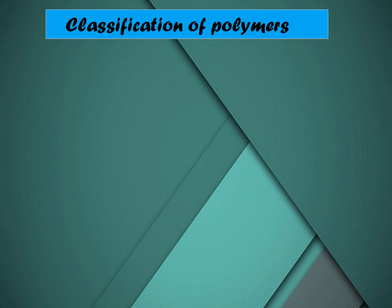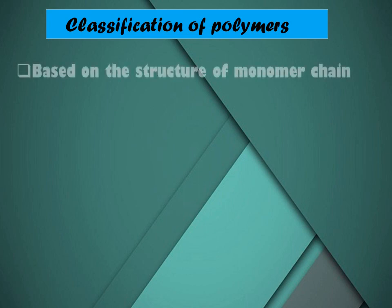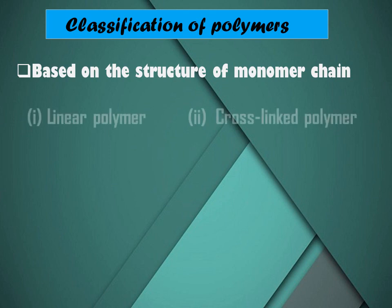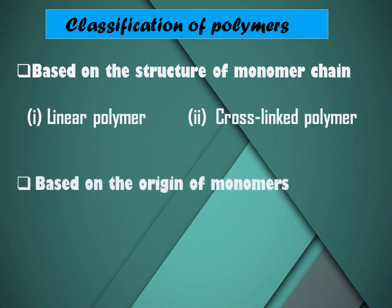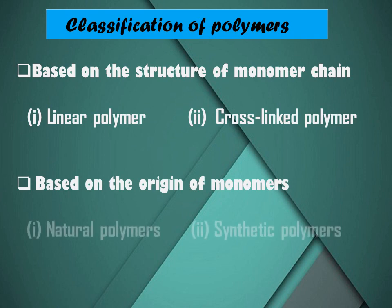Classification of polymers: Based on the structure of monomer chain, polymers can be classified as linear polymer or cross-linked polymer. Based on the origin of monomers, polymers can be classified as natural polymers or synthetic polymers.